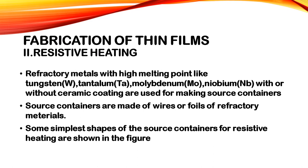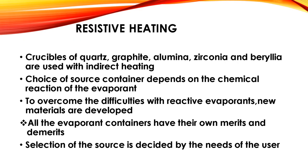The fabrication of thin films using resistive heating: refractory metals with high melting points like tungsten, tantalum, molybdenum, and niobium, with or without ceramic coating, are used for making source containers. The source containers are made of wires or foils of refractory materials. Crucibles of quartz, graphite, alumina, zirconia, and berlia are used with indirect heating. The choice of source container depends on the chemical reaction of the evaporant. To overcome difficulties with reactive evaporants, new materials are developed.